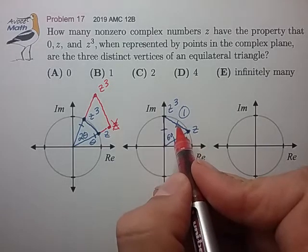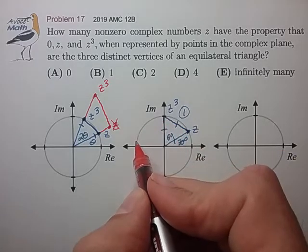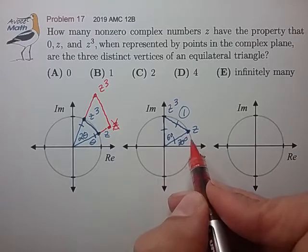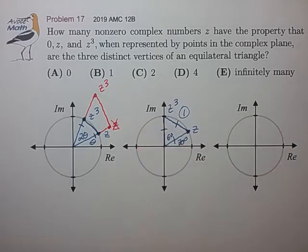So it looks like when z advances further, z cubed will race away, but z cubed has a chance to lap up and catch up with z. So let's see where that happens.